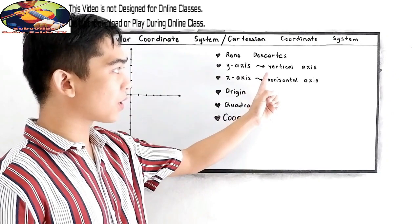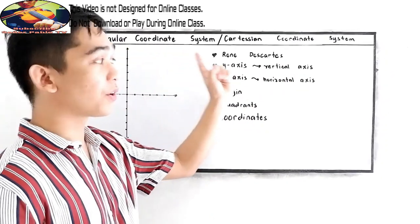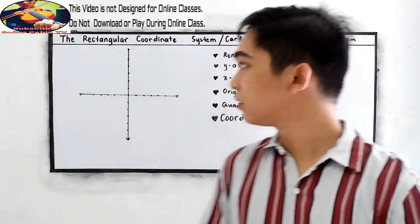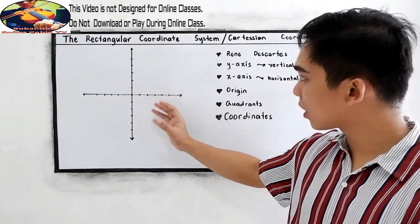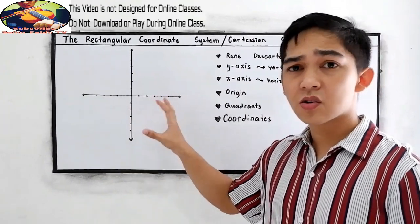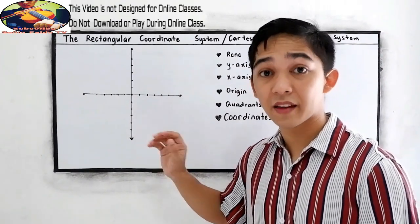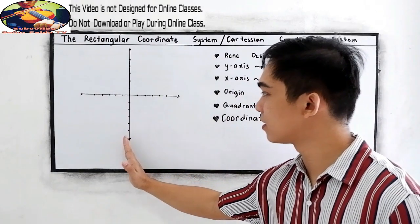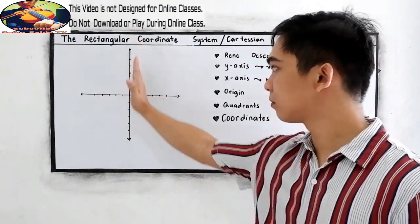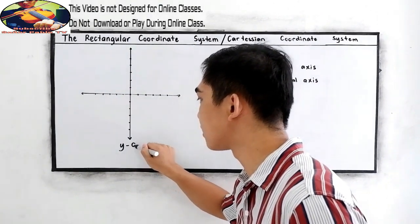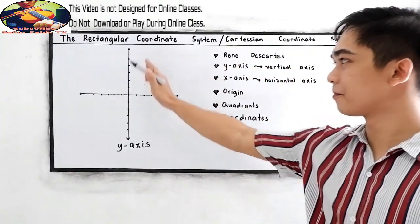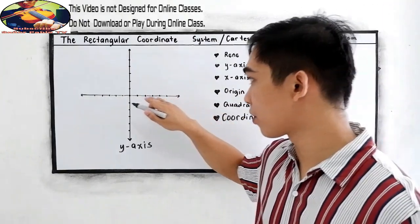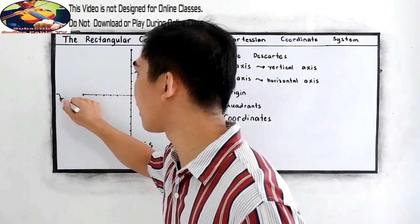The y-axis is our vertical axis in our rectangular coordinate system. The x-axis is the horizontal axis. Now, we have our rectangular coordinate system here. Let us locate where the y-axis and the x-axis are. We know that the y-axis is the vertical axis — this is our vertical axis. And we have the x-axis, the horizontal axis — so this is our x-axis.